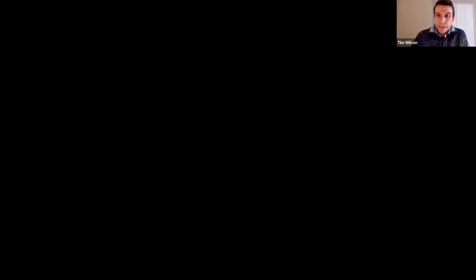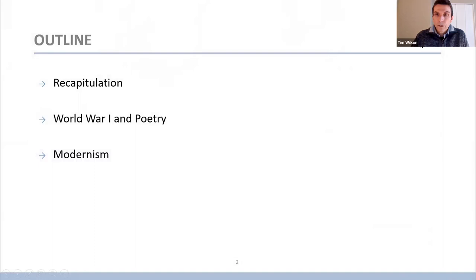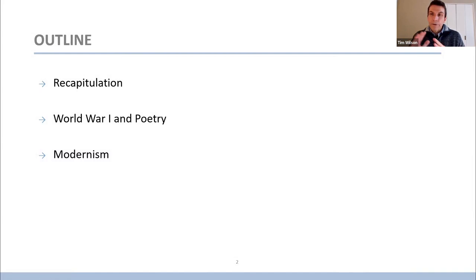Without further ado, I'd like to get started — we'll share the PowerPoint presentation. As discussed, we're going to look at first a recap of some of the themes we've covered through the first three major works: Homer, Virgil, and Shakespeare. This sets us up for how things change with Virginia Woolf, World War One, and modernism. We'll look at the effect of World War One on literature directly and on World War One poetry. In the next lecture we'll look at modernism.